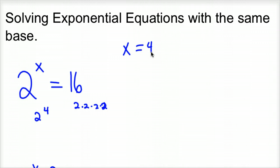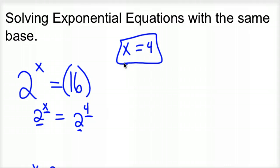Another way to look at it is convert this number to that same base. So 16 we know is 2 to the 4th, so we got 2 to the x equals 2 to the 4th, so x has to be 4 because these two bases are the same. So that's how you'd look at that problem.